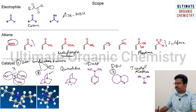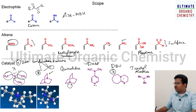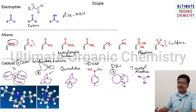In quinuclidine, for example, the lone pair is away from the two carbon atoms because it is a bridged system, making it sterically unhindered. In DMAP, the nitrogen is also in a ring system which is rigid. This type of rigid system makes the nitrogen more basic and more reactive, resulting in a faster reaction rate.